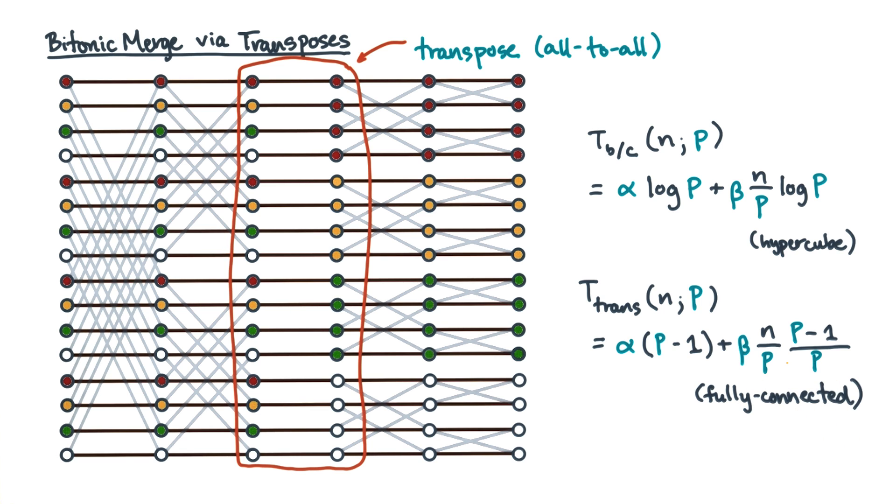Each scheme exhibits a latency bandwidth trade-off relative to the other. Here we get rid of the log p factor on the beta term at the cost of increasing the alpha term factor from log p to p.